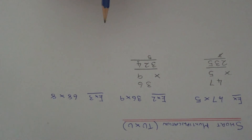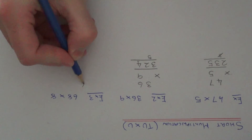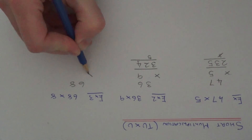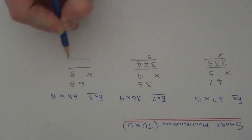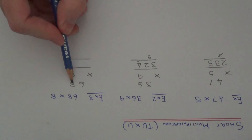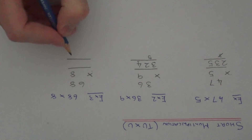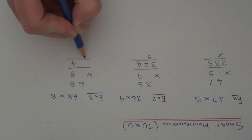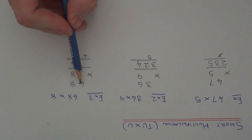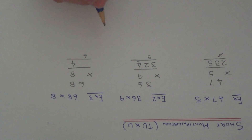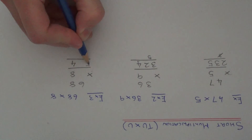In our final example we have 68 times 8. Lay the numbers out like this. Start with 8 times 8 which is 64, put the 4 at the top and carry the 6 underneath. Then do 6 times 8 which is 48, add on the 6 to give 54. So our final answer is 544.